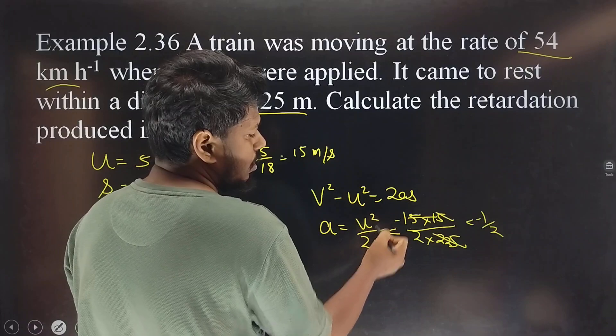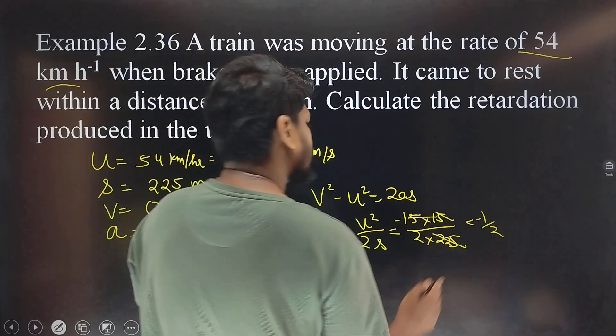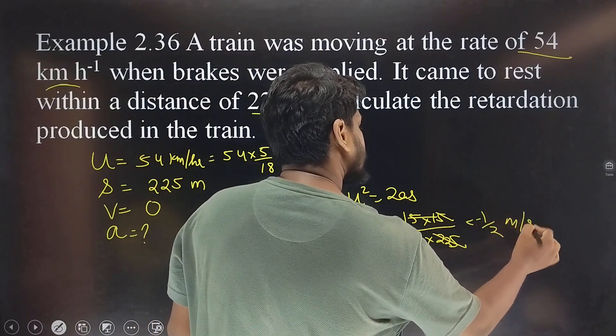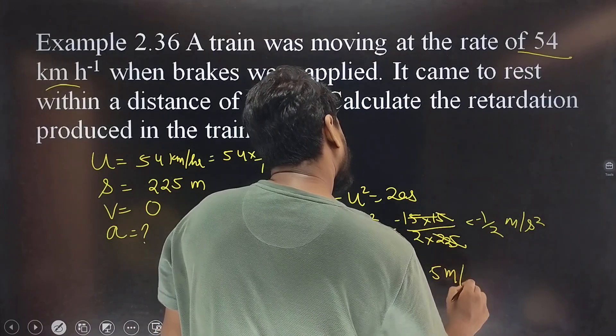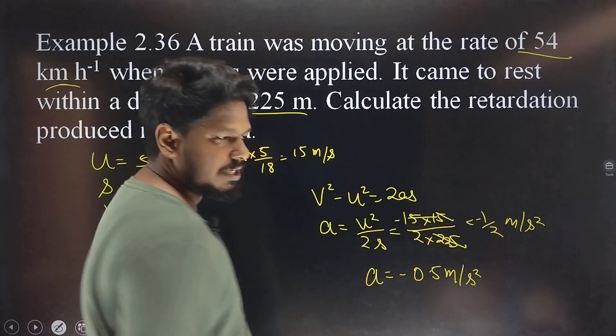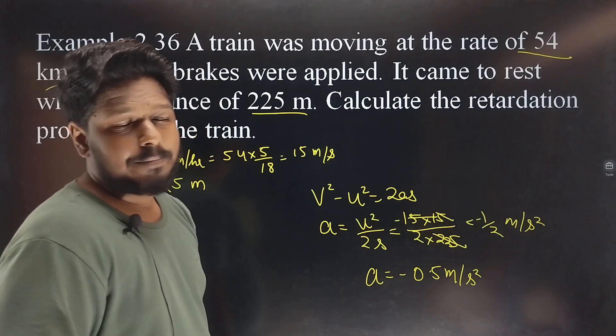So 0 minus 15 times 15, the minus is equal to negative 0.5 meters per second squared. So acceleration value is minus 0.5 meters per second squared. The minus represents the retardation.